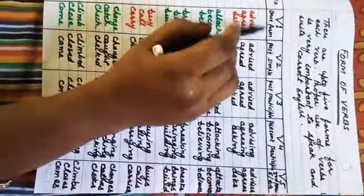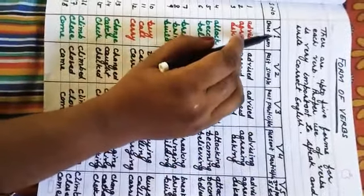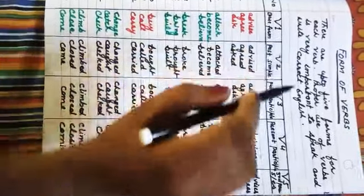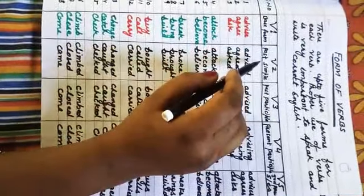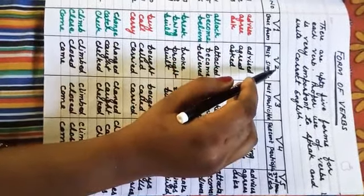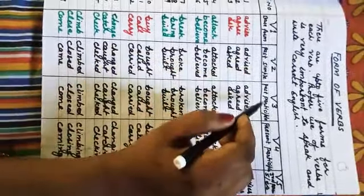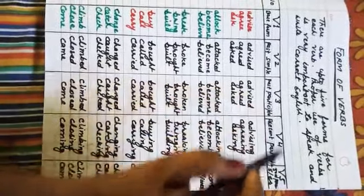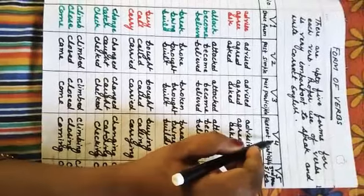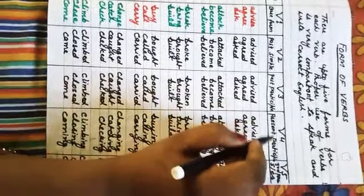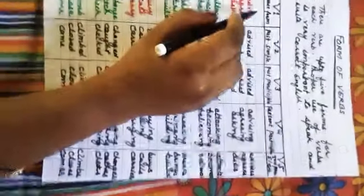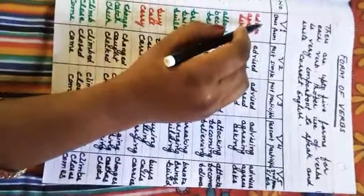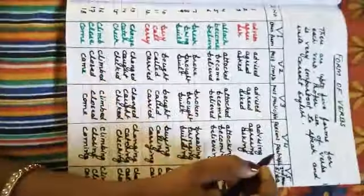You can see this chart. The base form is called verb 1. Past simple is called verb 2. Past participle is called verb 3. Present participle is called verb 4, which is the base form plus -ing. Verb 5 is the third person singular form.